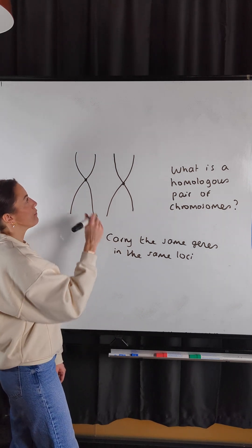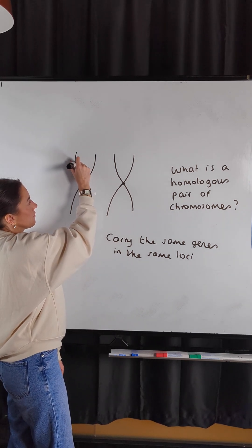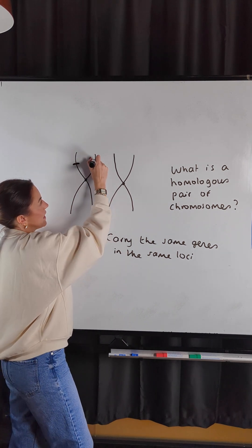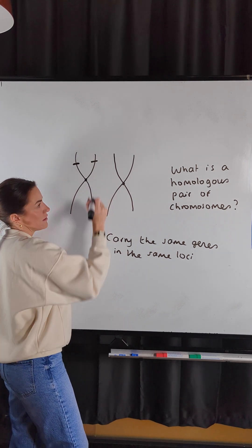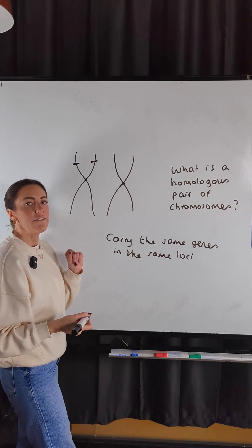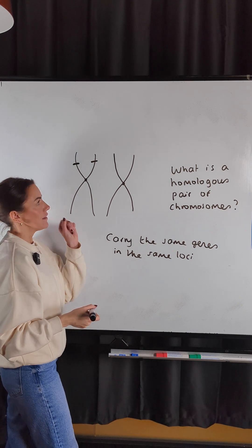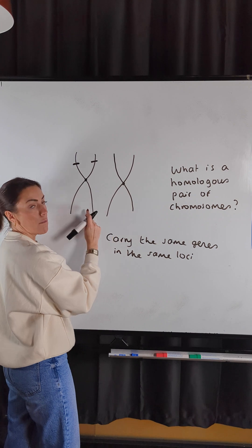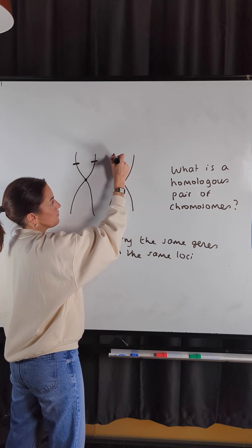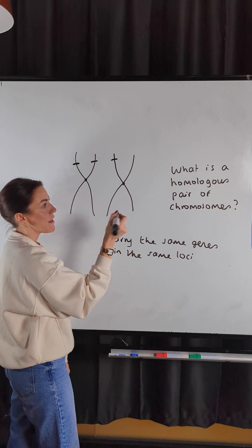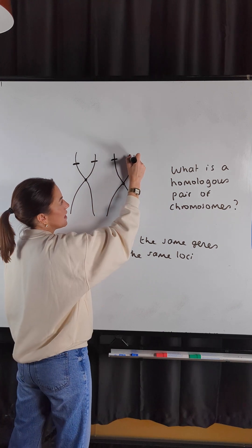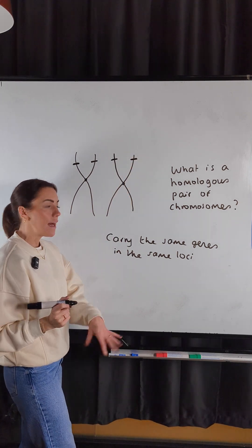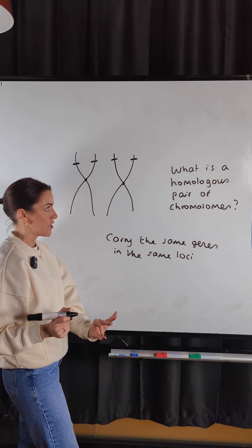So for example, if this chromosome had a gene for eye colour in that position, then this is in the homologous pair. So this chromosome — the second chromosome in the homologous pair — would have the same gene for eye colour in the same position.